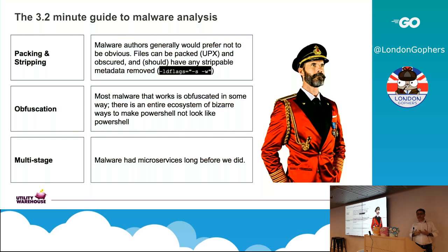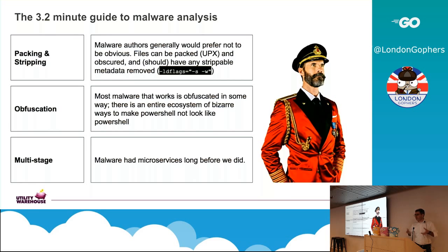Binaries will be packed. In Go, you can strip out interesting stuff in metadata and use tools like UPX to pack it. Obfuscation is something you see very often in the PowerShell ecosystem — you want to get a piece of PowerShell to run, so you Base64 encode it, Base64 encode it again, do something else crazy to it, and pull it out the other side. A quick way to figure out if anything's happening is just look for Base64 decode being run on any system.